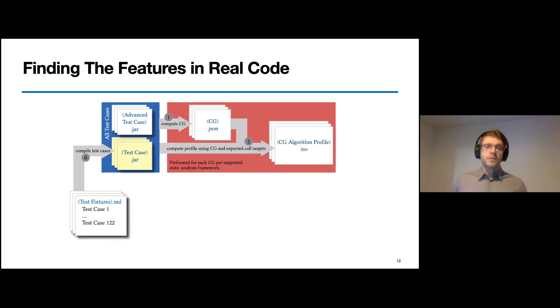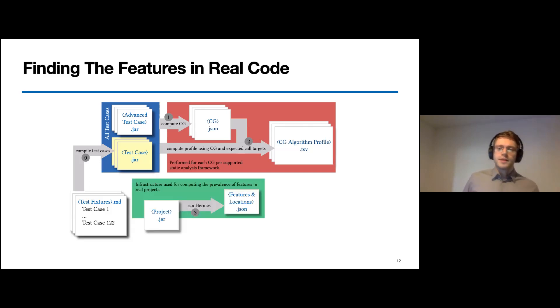Now that we know that the feature coverage from the state-of-the-art frameworks and implementations is not that good, we still have to ask ourselves the question, do these features and APIs actually play an important role in real-world code or are they just edge cases? To figure that out, we need to be able to find the features and their locations in actual programs. And exactly for that purpose, we developed Hermes.